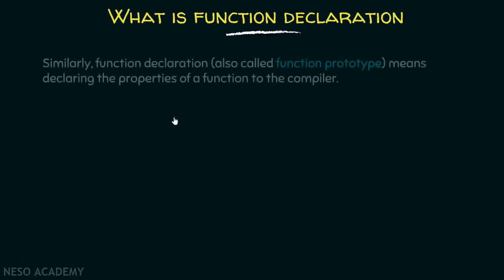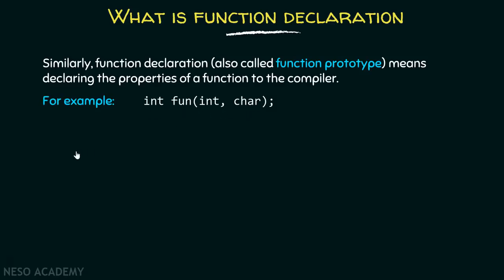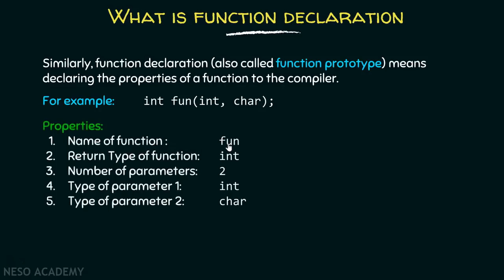Similarly, function declaration — also called a function prototype — means declaring the properties of a function to the compiler. For example, this is the way we can write the function prototype. The properties of this function 'fun' are: name of the function is 'fun', return type is int (integer), number of parameters are two, type of parameter one is integer, and type of parameter two is character. Please remember that a function prototype always ends with a semicolon — this is important.